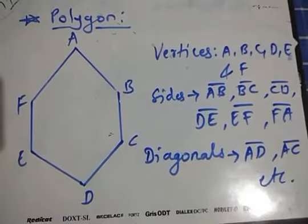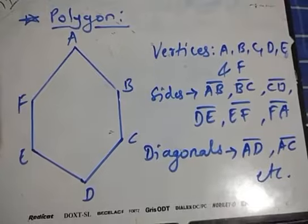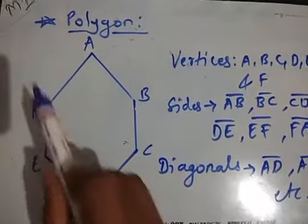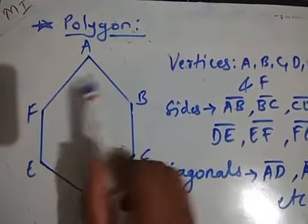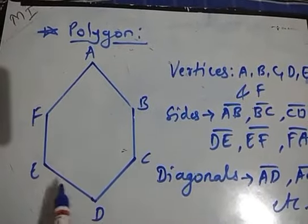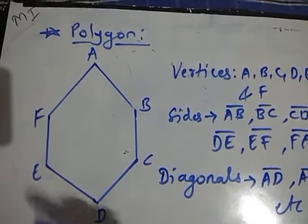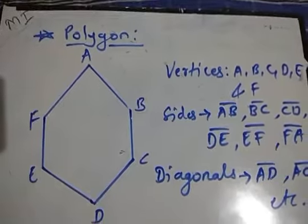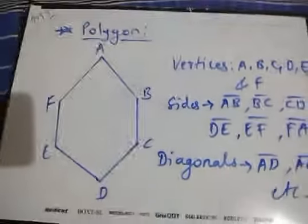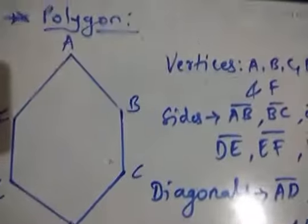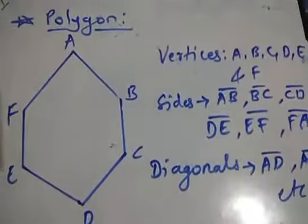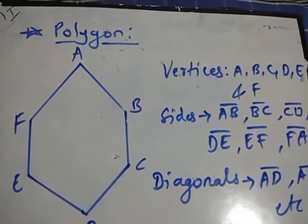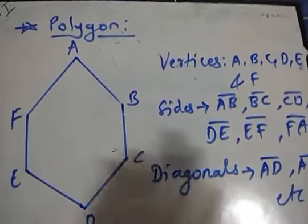Now let's study more about polygon. This polygon has six sides — one, two, three, four, five, and six. So we call this polygon a hexagon. All closed figures made up of line segments are called polygons. In that, triangle, quadrilateral, hexagon, pentagon, octagon — like that, many types come.